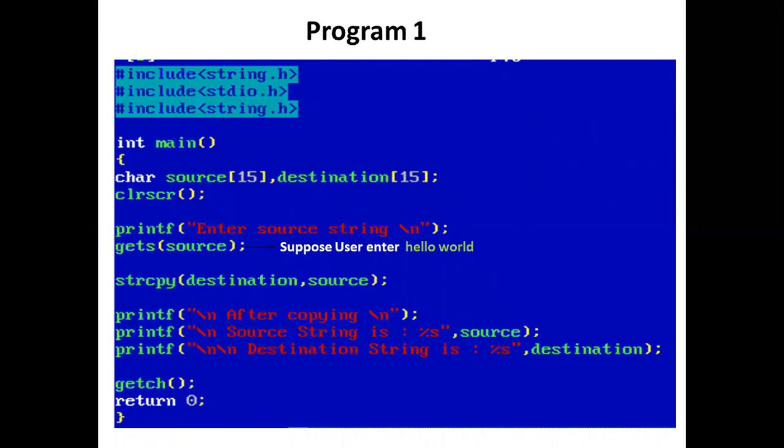So character by character, including the null character, is copied from source to destination. A printf statement then prints: after copying, source string is 'hello world' and destination string is 'hello world'.